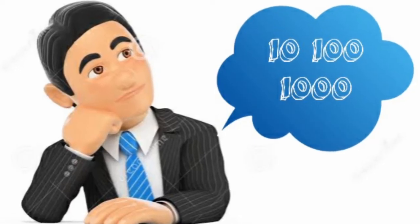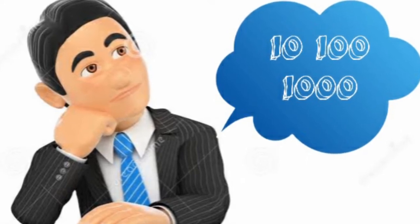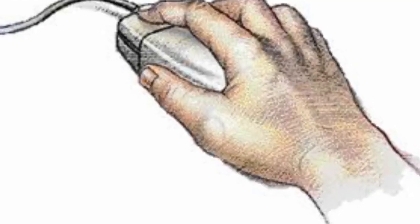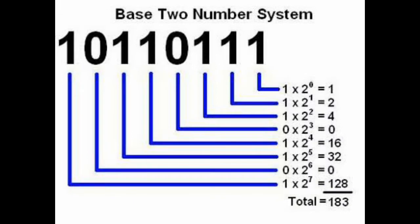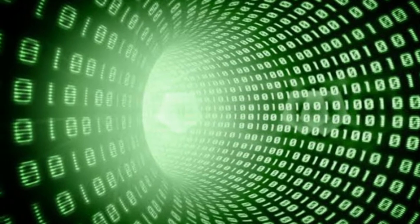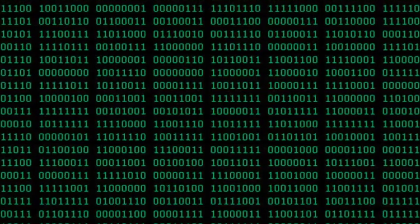We, the humans, think in decimals — that is, in base 10. But what do computers do? Do they think like human beings? No. They have a different number system. They think in base 2, and this is called the binary numeral system.